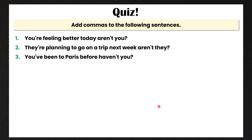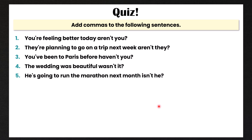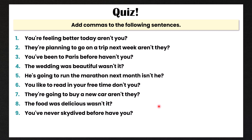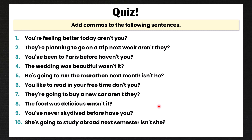Number three: 'You've been to Paris before, haven't you?' Number four: 'The wedding was beautiful, wasn't it?' Number five: 'He's going to run the marathon next month, isn't he?' Number six: 'You like to read in your free time, don't you?' Number seven: 'They're going to buy a new car, aren't they?' Number eight: 'The food was delicious, wasn't it?' Number nine: 'You've never skydived before, have you?' And finally, number ten: 'She's going to study abroad next semester, isn't she?'